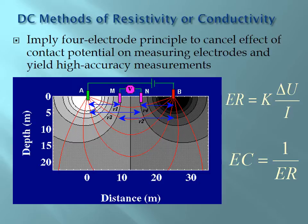Moving on from electrical potential to DC resistivity methods: Ohm's law shows that resistivity is directly proportional to potential divided by current. In resistivity methods, a four-electrode probe is used — current is injected between outer A and B electrodes, and potential is measured with the inner M and N electrodes. There are different electrode arrangements. Conductivity is the inverse of resistivity, so EC and ER are essentially the same type of measurement.